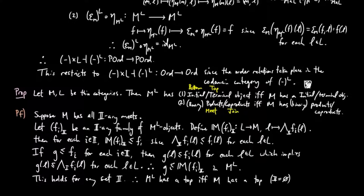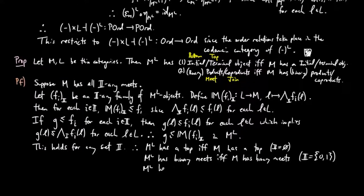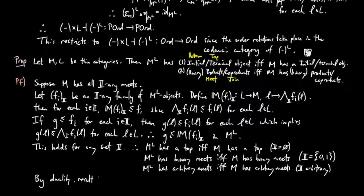This holds for any set I. Therefore M^L has a top if and only if M has a top — we take I to be the empty set in this case. We also have M^L has binary meets if and only if M has binary meets, taking I to be the two-element set {0, 1}. And M^L has arbitrary meets if and only if M has arbitrary meets, taking I to be an arbitrary set. Then by duality, the result holds also for bottom and joins.